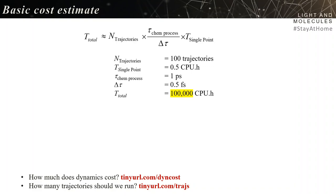If I plug in typical figures — 100 trajectories, half a CPU hour per single point, one picosecond of chemical process, and half a femtosecond time step — it gives a total of 100,000 CPU hours. That's quite a lot, especially considering that one CPU hour costs about two cents of a euro, making this project cost around 2,000 euros to run.